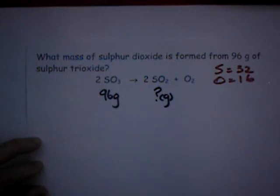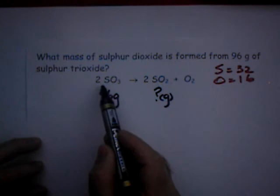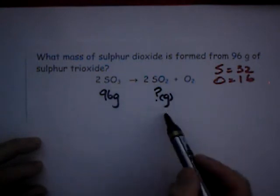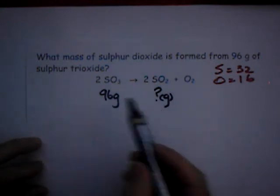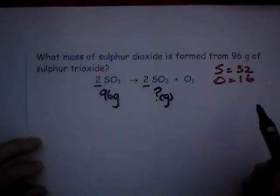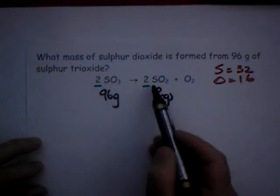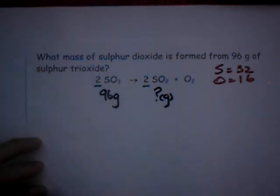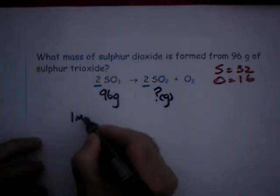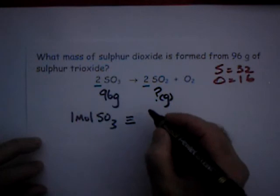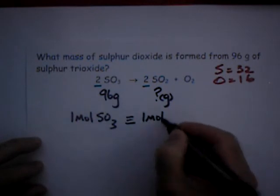We begin by making an equivalence between what we're given, the given information on sulphur trioxide, and what we're asked, information about sulphur dioxide. These twos are important in the balanced equation. They indicate that two moles of sulphur trioxide will produce two moles of sulphur dioxide. If two is equivalent to two, then one is equivalent to one. This allows me to write that one mole of SO3 is equivalent to or will produce one mole of SO2.